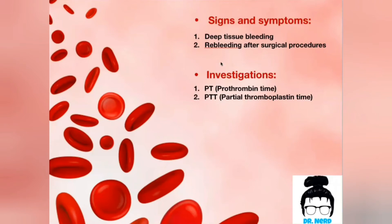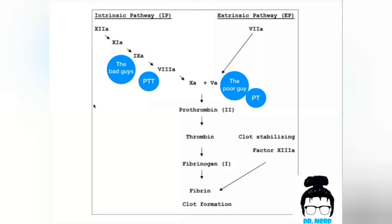For investigations, we use BT and BTT. Both BT and BTT are used to detect an abnormality in the common pathway — whenever these two are both prolonged, there is an issue with the common pathway. Whenever BT alone is prolonged, there is an issue in the extrinsic pathway. Whenever BTT alone is prolonged, there is an issue in the intrinsic pathway. The intrinsic pathway has four factors, so it takes the investigation with more letters — BTT. The extrinsic pathway has only one factor, so it takes the investigation with fewer letters — BT. The common pathway is investigated by both BT and BTT.